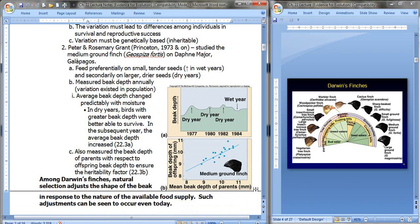Secondarily, if they have to, they'll feed on larger, drier seeds, which are more predominant in the dry years. That probably makes sense. So they measured their beak depth annually, and the average beak depth changed predictably with moisture. So for example, in the dry years, the birds with the greater beak depth were better able to survive. In the subsequent year, the average beak depth increased. Because, if those that had the deeper beak were more successful, the next year you would see more of them in the population, because they were more successful in feeding and therefore in reproduction. They also measured the beak depth of parents with respect to their offspring's beak depth, to make sure that there was a heritable factor. And that's shown right here.